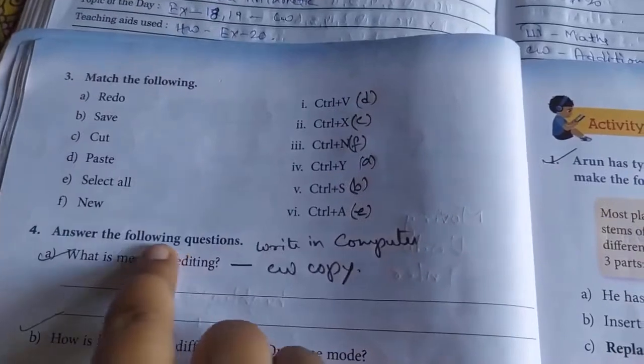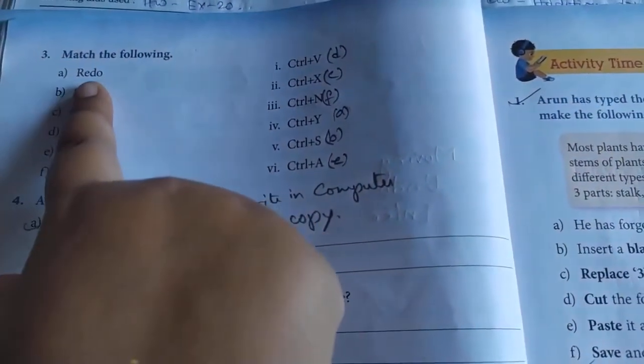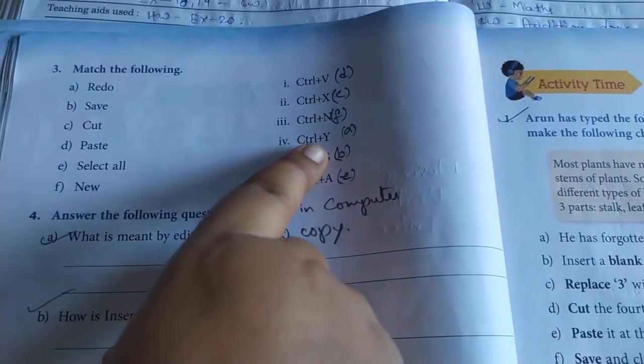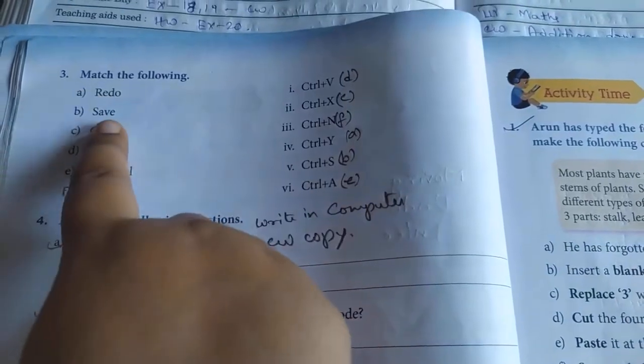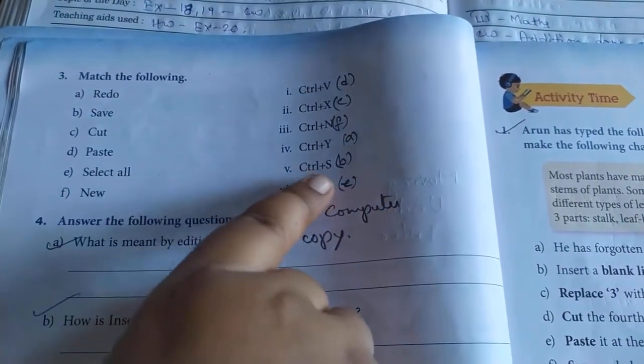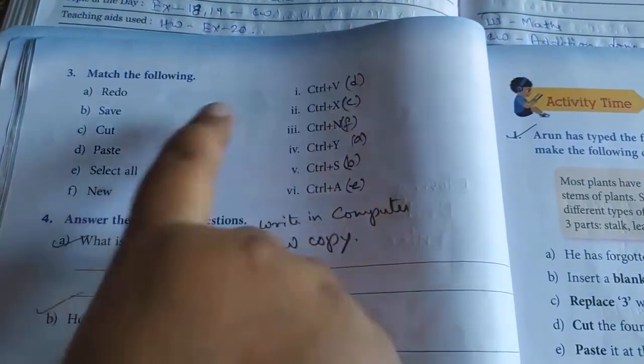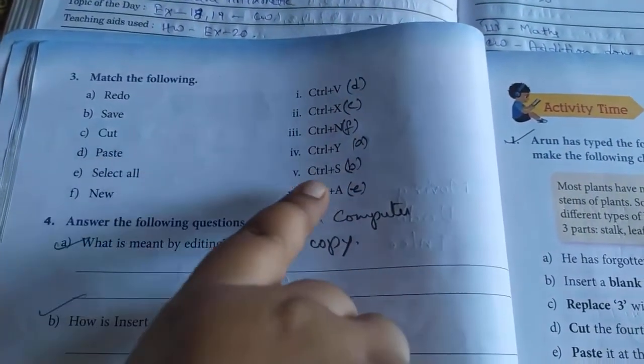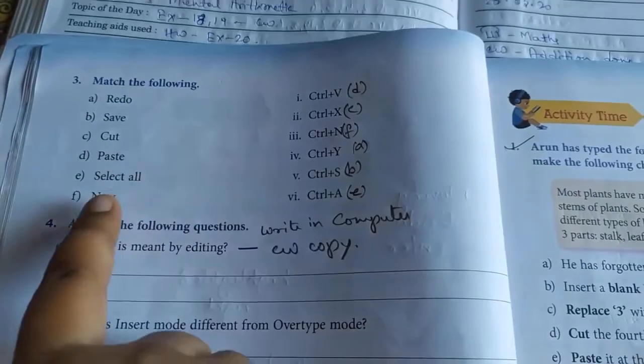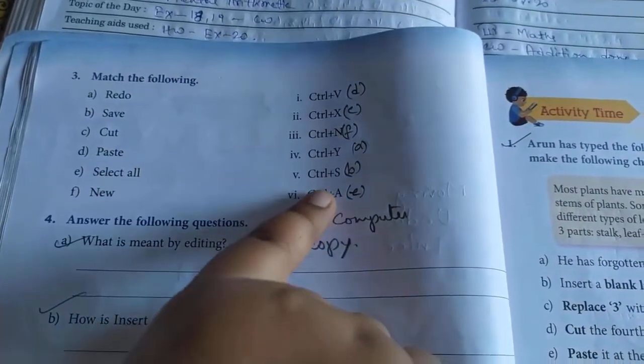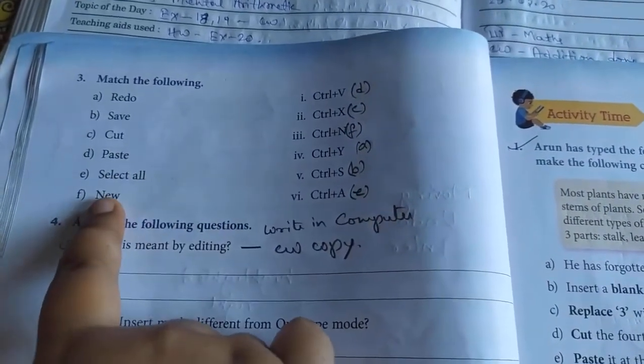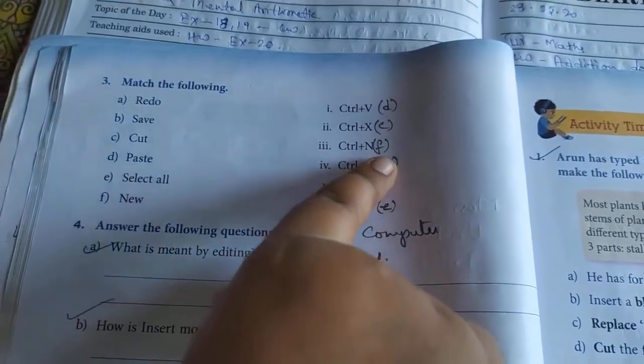Now match the following. Redo: Control plus Y. Save: Control plus S. Cut: Control plus X. Paste: Control plus V. Select all: Control plus A. New: Control plus N.